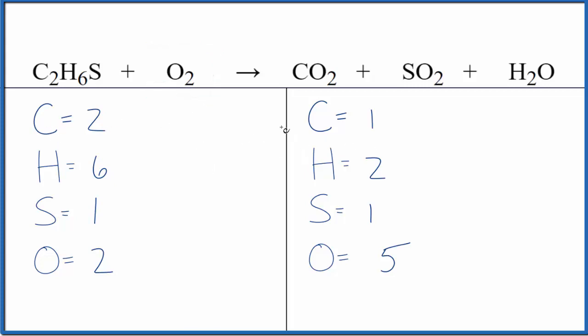Why don't we first balance the carbon atoms? We could put a two here in front of the CO2. One times two, that would give us two. Those are balanced. Let's update the oxygens. So we have two times two, that's four plus two, that's six plus one. Now we have seven oxygen atoms.